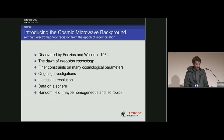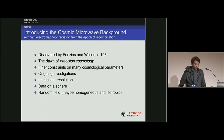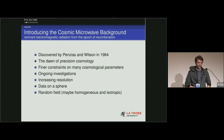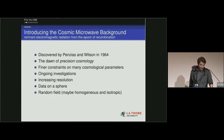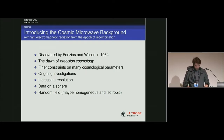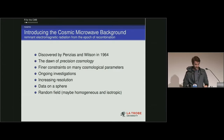It offered many finer constraints on lots of cosmological parameters — for example, the cosmological constant, which describes the global geometry of the universe. It also provided evidence for the Big Bang Theory and for Einstein's cosmological principle, which states that the universe is roughly the same no matter where you are in it or which direction you're looking — at least on large distance scales. In other words, it's homogeneous and isotropic.